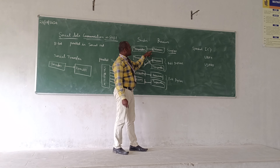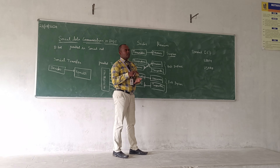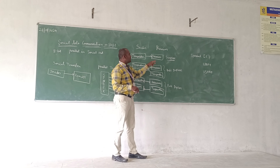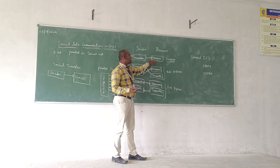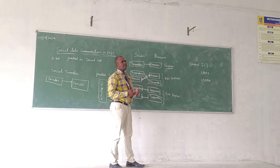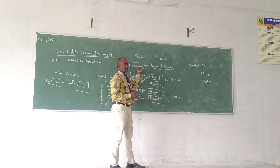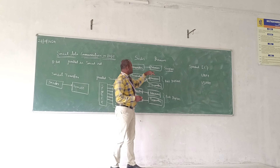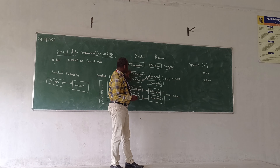Suppose a computer is connected to a printer. From the computer, you give the input. Based on your command, it prints whatever document you have given. From the printer, we cannot get any input signal back to the computer. That is the simplex mode of data transfer in serial data communication.